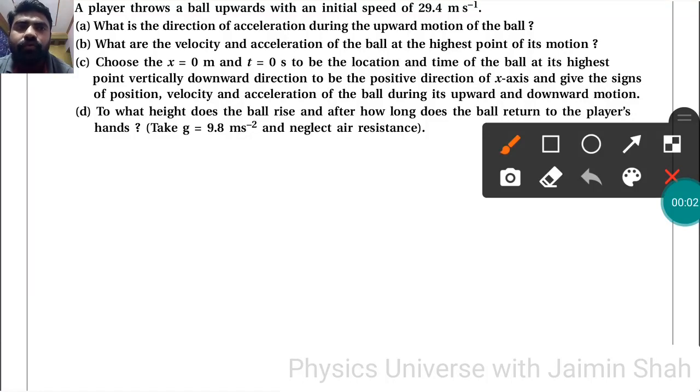Okay, now the question is: a player throws the ball upward with an initial speed of 29.4 m/s. What is the direction of acceleration during the upward motion of the ball? See here, direction of acceleration during upward motion of the ball - it will be downward direction because acceleration due to gravity is always in the downward direction.